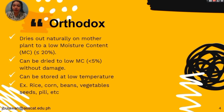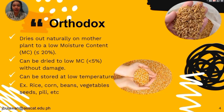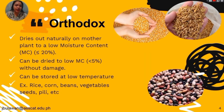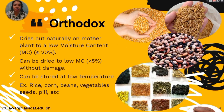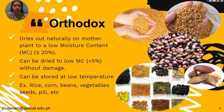Orthodox seeds dry out naturally on the mother plant to a low moisture content of 20%, and can be dried to a low moisture content of 5% without damage. So they can be stored at low temperature. Examples are rice, corn, beans, vegetable seeds, pili, and nuts.